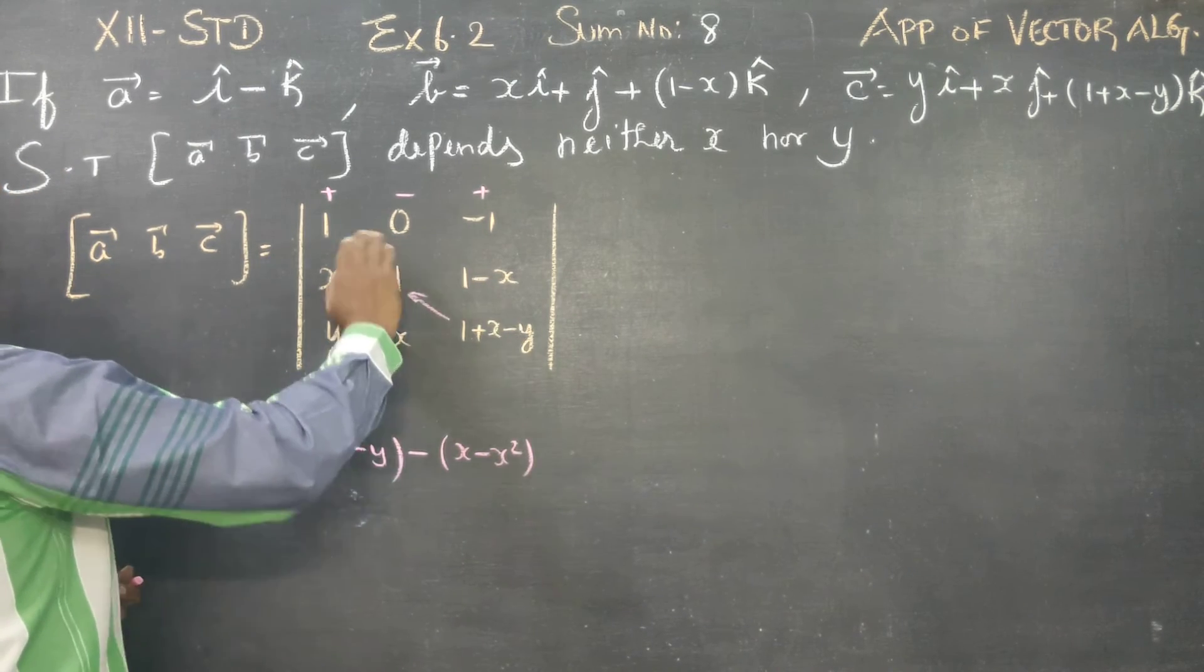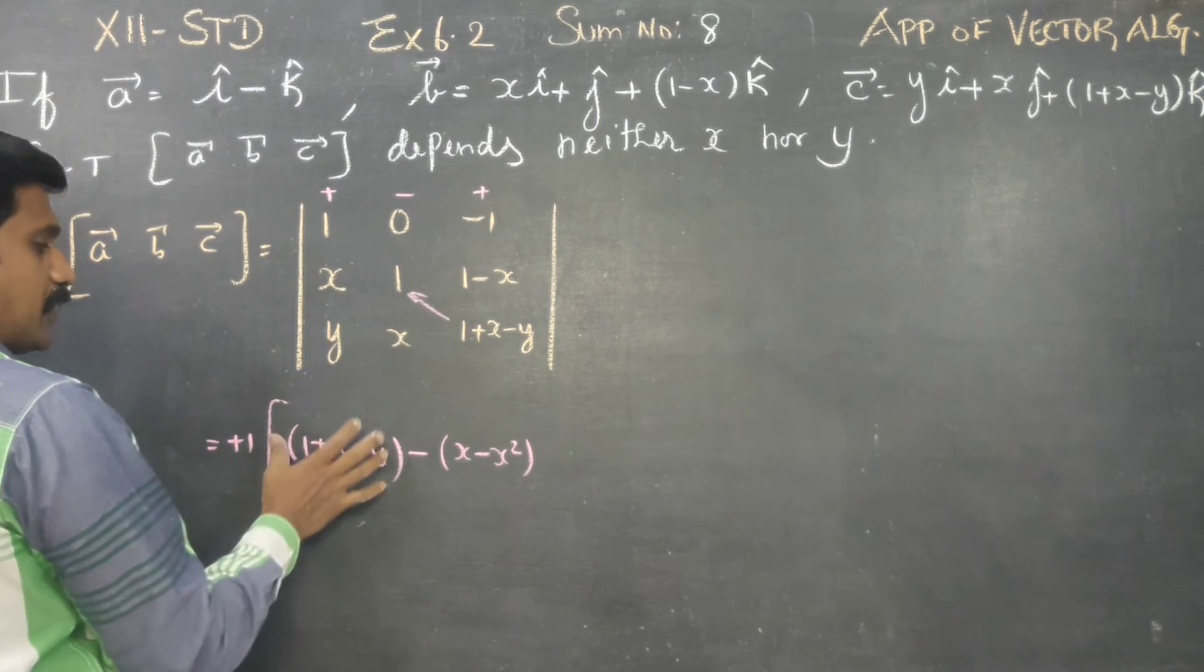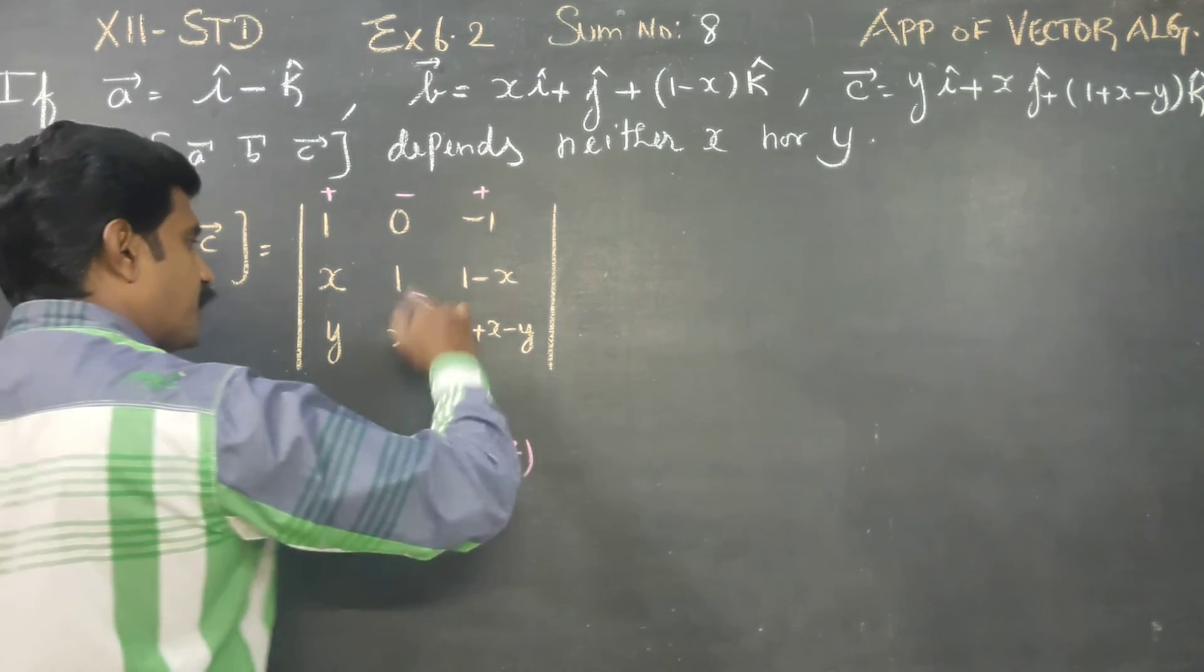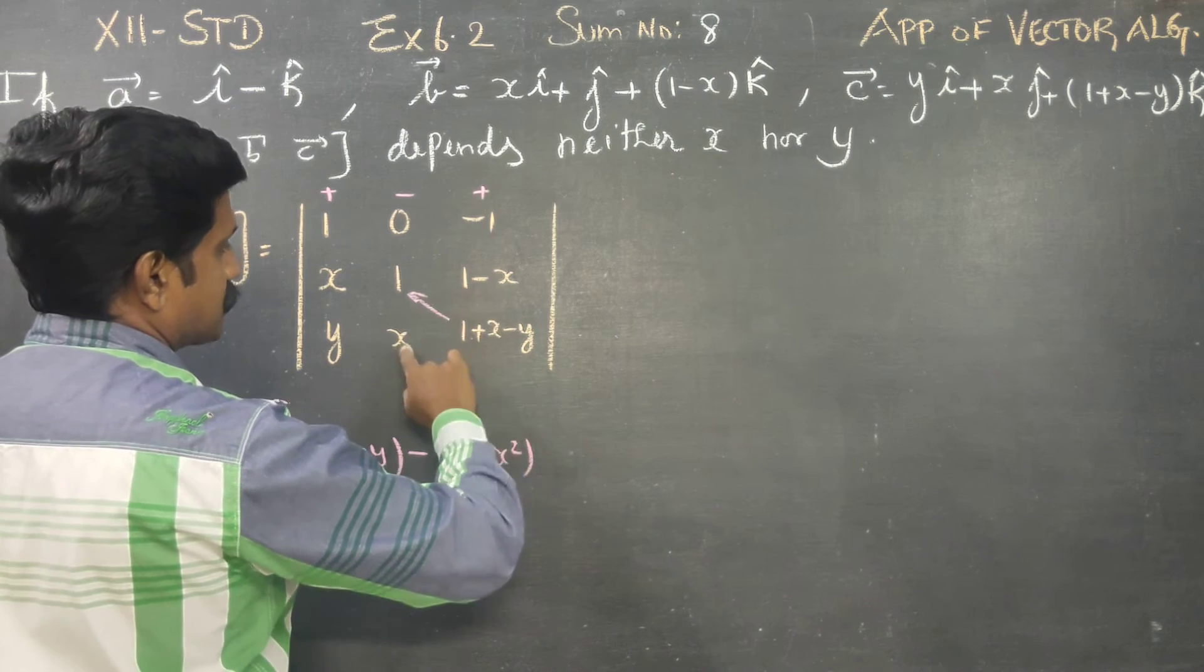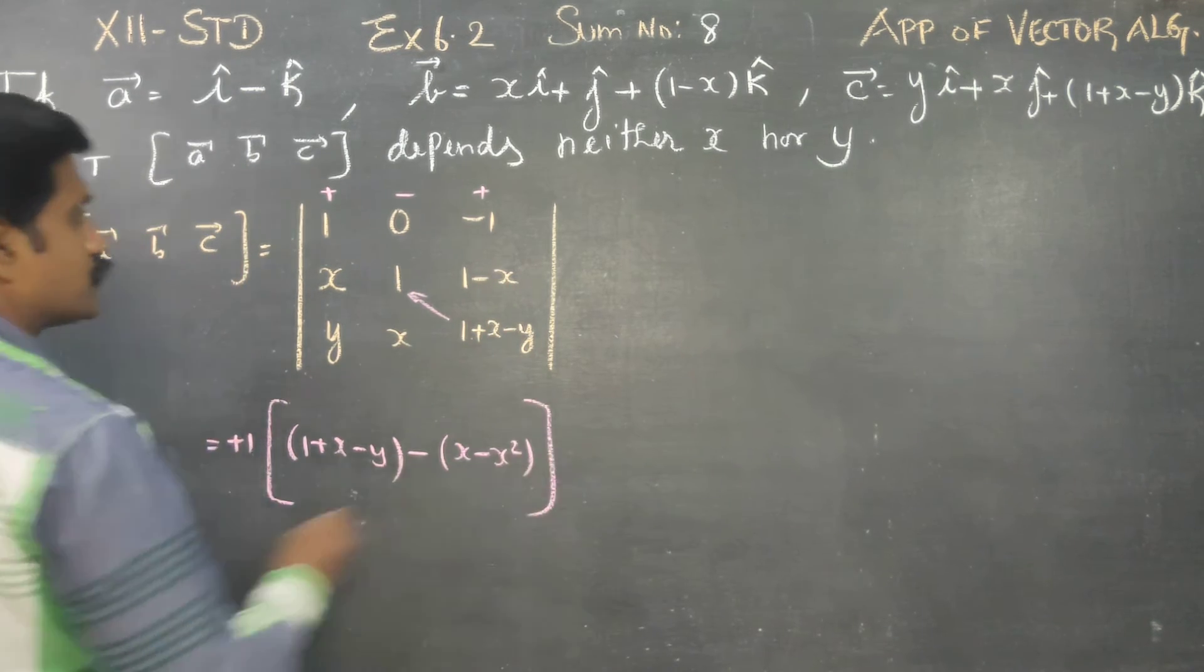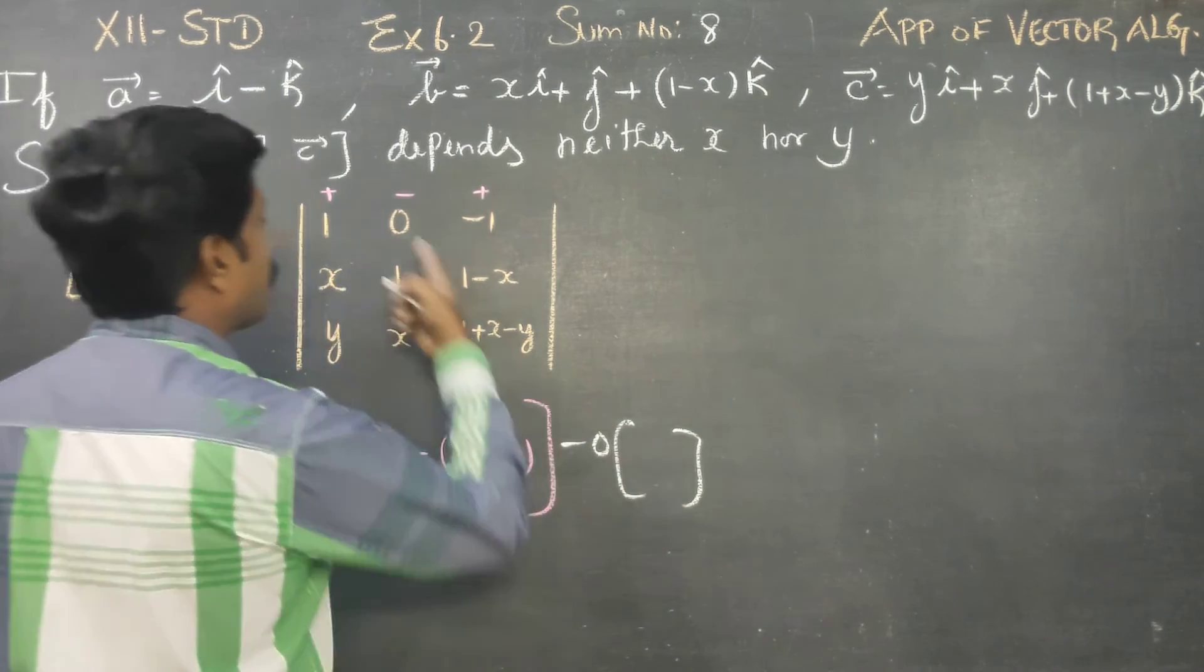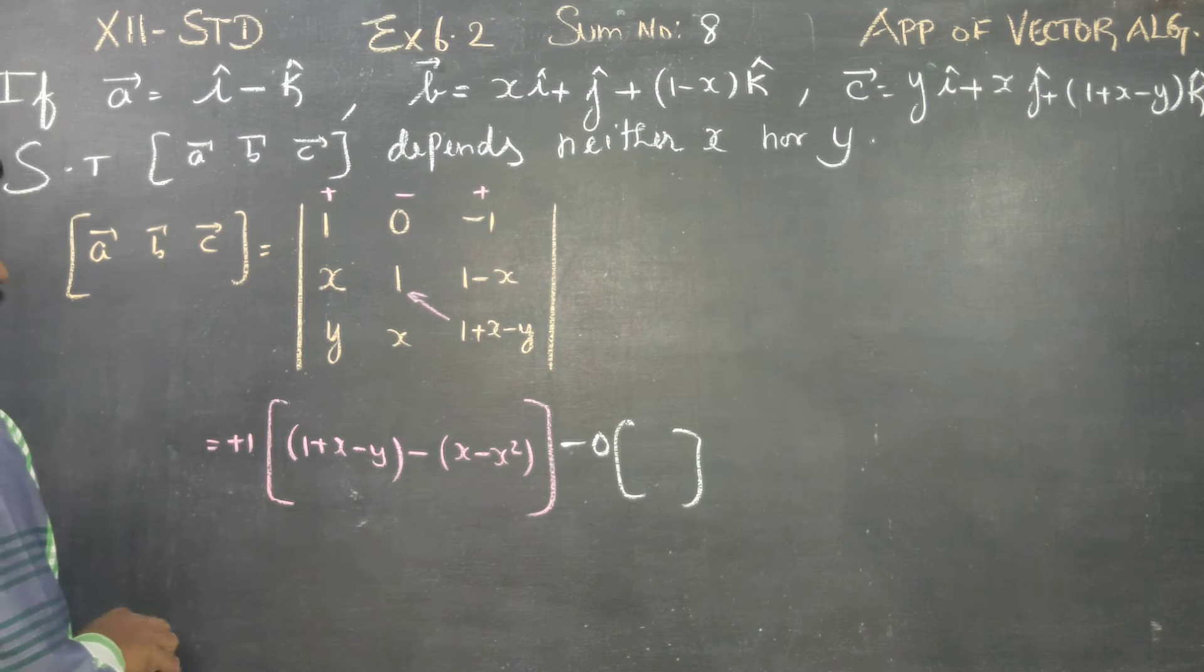Right hand side minus left hand side. 1 on the right hand side, minus the left hand side gives minus x, x square, and that will be minus y. Now, the first part. Minus 0 into this, 0 into anything is 0. The last one is minus 1 into this.